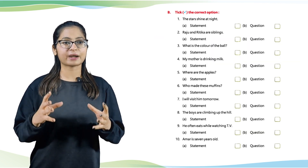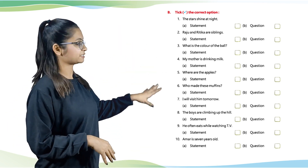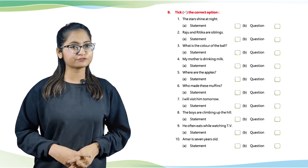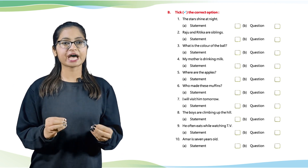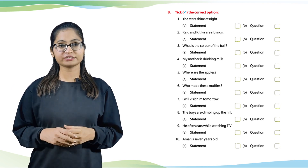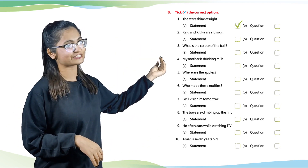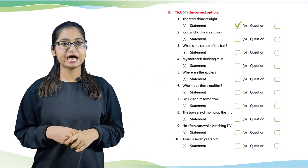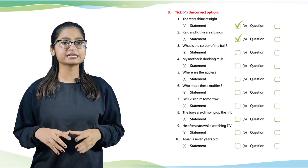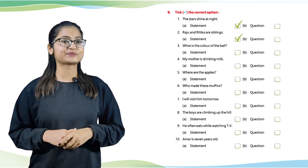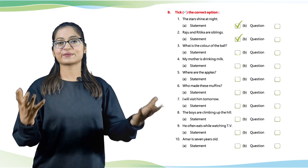Moving down, we have Part B: Tick the correct option. We have given questions including options and we have to tick the correct answer. Number 1: Stars shine at night. What do you think — is it a question or a statement? Of course it's a statement because it's not ending with a question mark. Number 2: Raju and Hrithika are siblings — again a statement. Number 3: What is the colour of the ball? It is ending with a question mark, so it's a question.